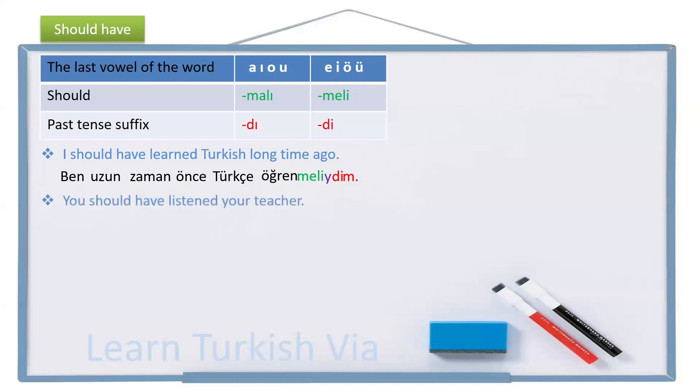Another sentence. You should have listened your teacher, but you didn't and you regret about it. So, let's try to translate. You, sen, teacher, öğretmen. Your teacher, öğretmenin. The teacher here is a particular teacher, not any teacher. So, we need an accusative suffix.